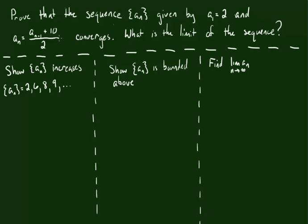And we want to prove: one, that this thing converges, and two, that the limit of the sequence can be found and that we know what it is. So let's go ahead and start. In order to prove that this thing converges, which is the first part of our problem, we need to prove that it increases and that it's bounded above. Now, it's not necessarily clear that this is going to increase until you start listing off some of the terms in the sequence.